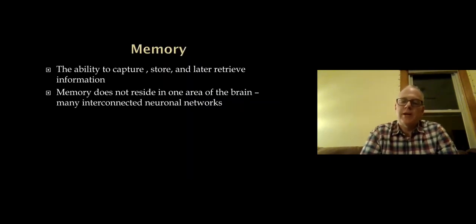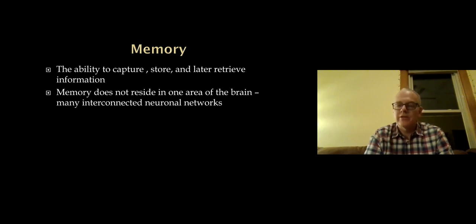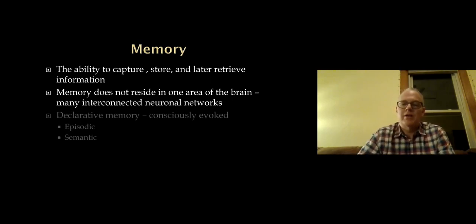We'll spend some time talking about memory. Memory is very complex, but understanding the normal anatomy of memory can help us make sense of conditions that impair it. Memory is the ability to capture, store, and then later retrieve information. Memory is not a function of one area of the brain — these are huge neuronal networks. Some areas are more important than others, but there isn't just one memory part of the brain.